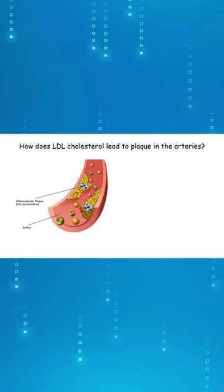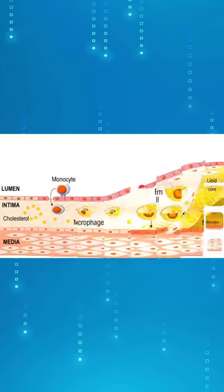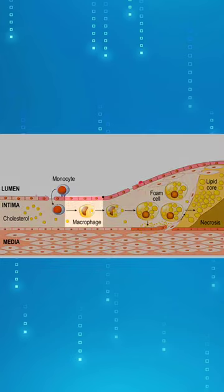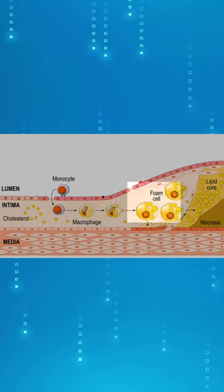The immune system responds to oxidized LDL cholesterol by sending macrophages to destroy it. Macrophages eat up the LDL cholesterol but then break it down to small lipid, meaning fats. So much LDL cholesterol is broken down to fats inside the cell that it disrupts lipid homeostasis in the macrophage. This changes the macrophage into a foam cell.